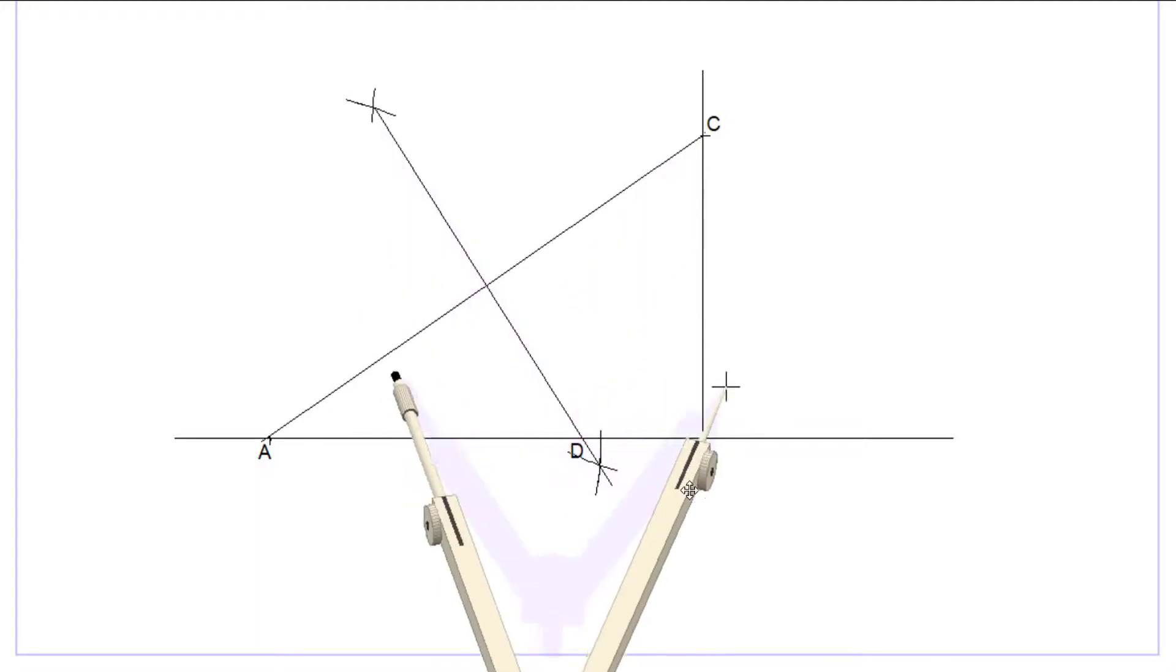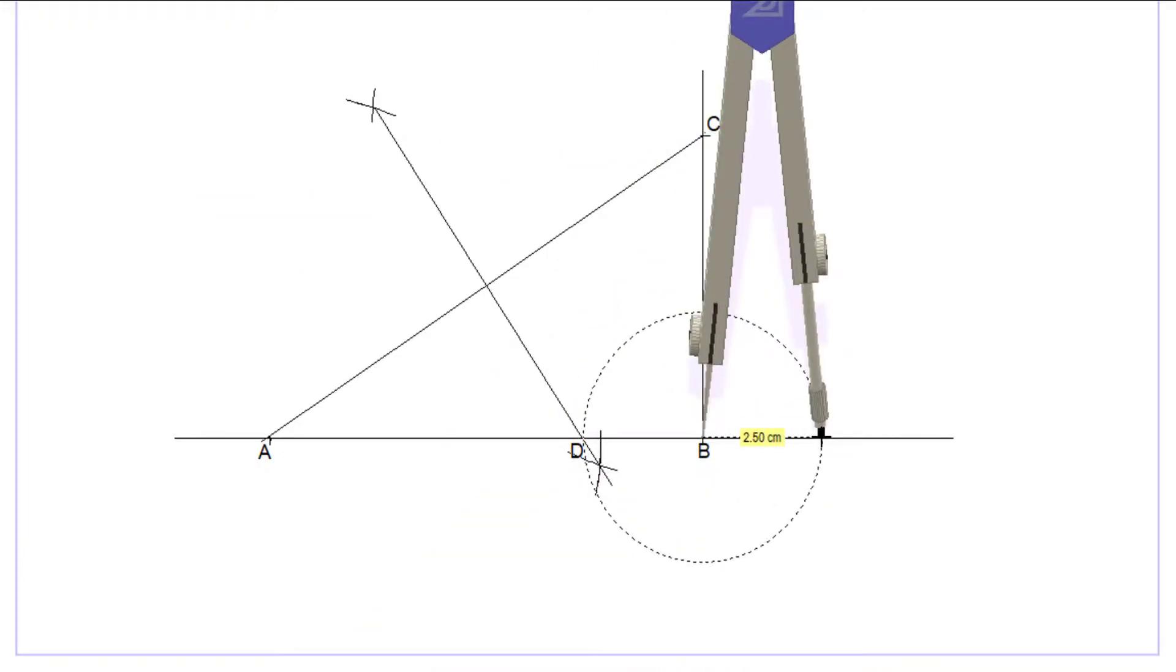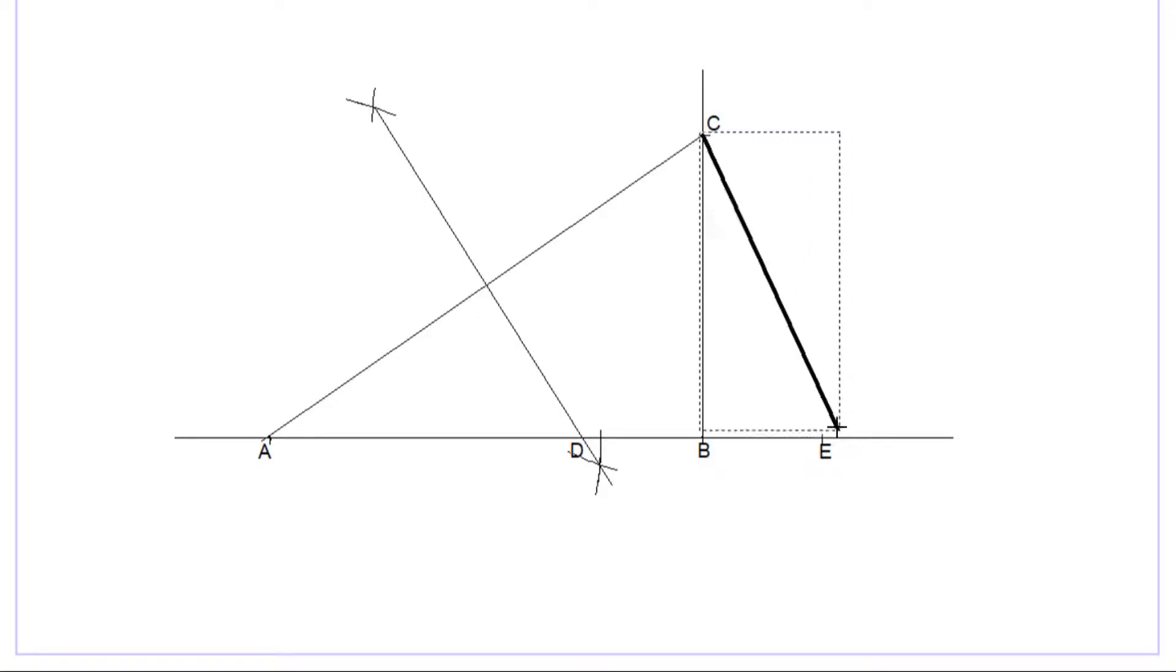The distance BD translates the same distance to the right-hand side of B to give us BE. The distance DE is our base, the base of our isosceles triangle. Connect C to E to give us line CE, and connect C to D to give us one of the sides of the isosceles triangle.